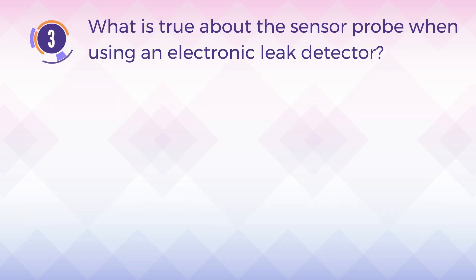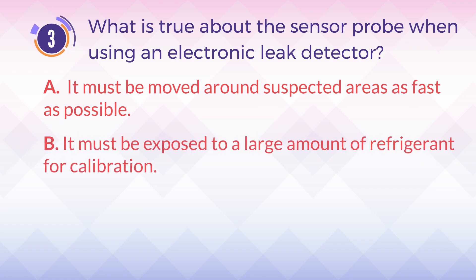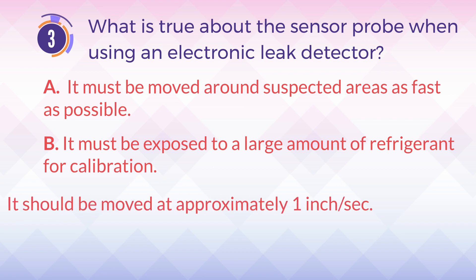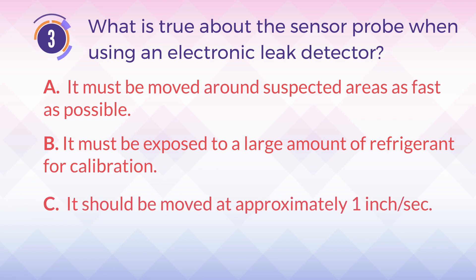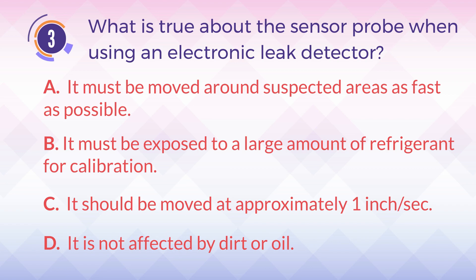Number 3. What is true about the sensor probe when using an electronic leak detector? A. It must be moved around suspected areas as fast as possible. B. It must be exposed to a large amount of refrigerant for calibration. C. It should be moved at approximately 1 inch per second. D. It is not affected by dirt or oil.